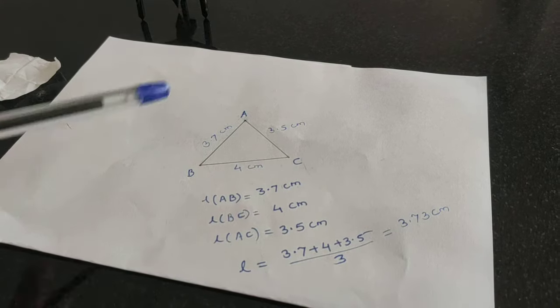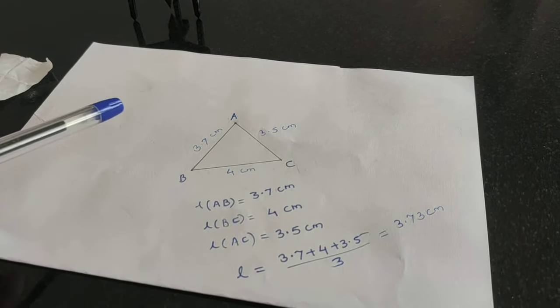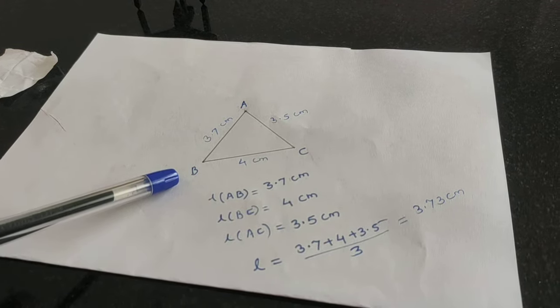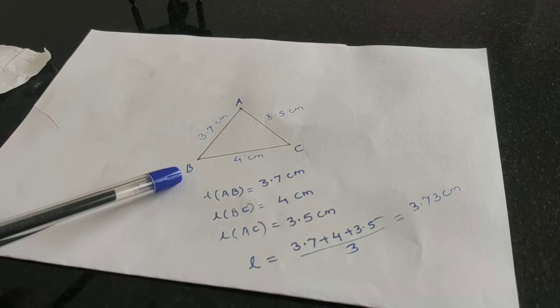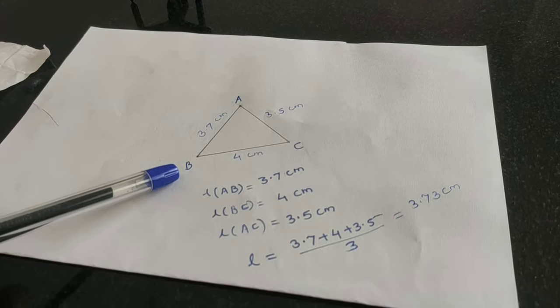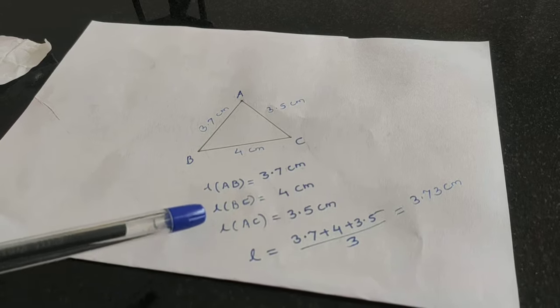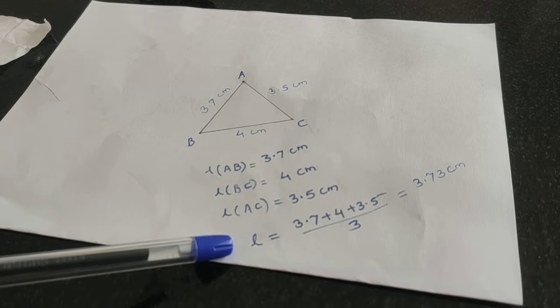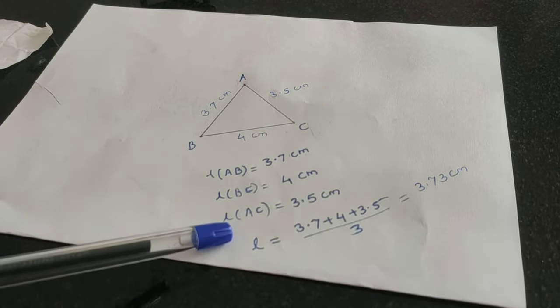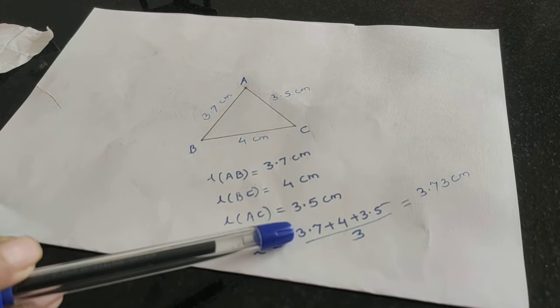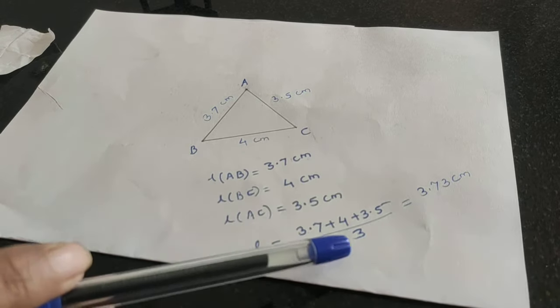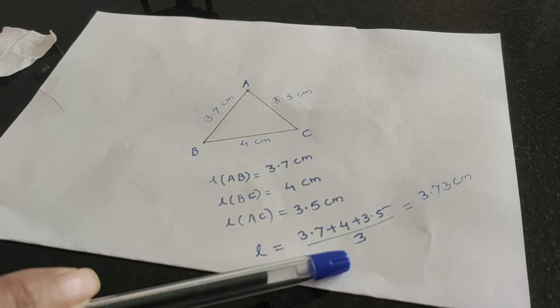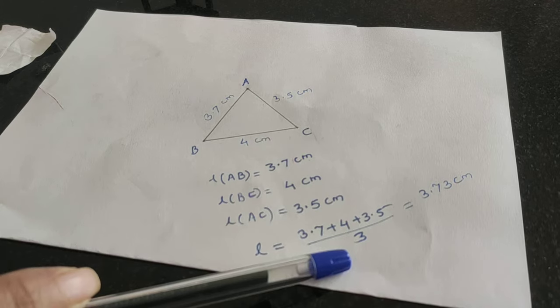You will have three points on the plain paper when you press it - points A, B, C. Join the three points to get a triangle. Using the scale, measure the length of AB which is 3.7 cm, BC is 4 cm, and AC is 3.5 cm. Now l is the average of all three sides. So AB plus BC plus AC upon 3 equals 3.7 plus 4 plus 3.5 divided by 3, which gives 3.73 cm.